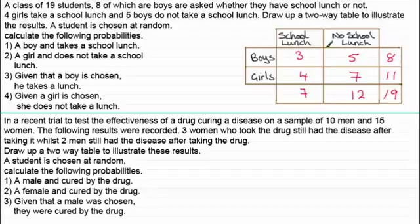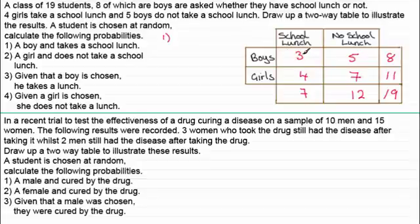So that's a simple two-way table. From this we should be able to answer the following questions where a student is chosen at random. The first one is the probability that a boy takes a school lunch. We're looking at the number of boys who take a school lunch, which is three, out of a total of 19. So the answer is three nineteenths.